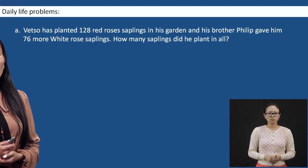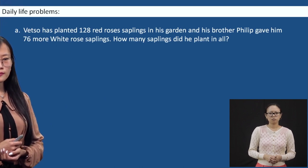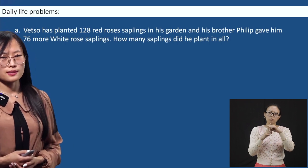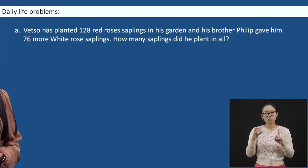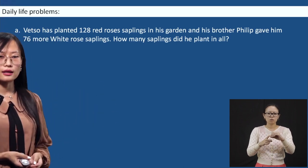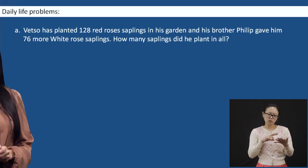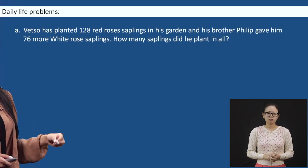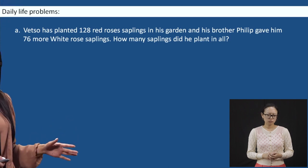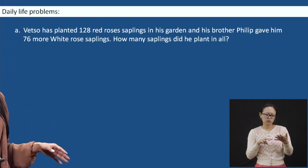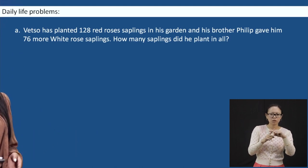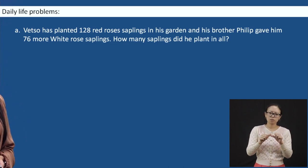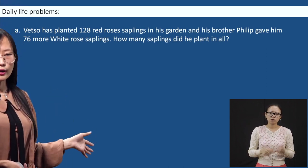We can relate addition to daily life problems, also called word problems. The steps are: first, read the question and understand it; second, find all the information given; third, decide what operation to use — addition, subtraction, or multiplication; fourth, solve the problem; and fifth, check the answer to see if it makes sense.